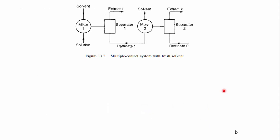A multi-contact system is required when there is a large amount of solute remaining in the raffinate or when there is unwanted carrier liquid in the extract. In this system, the solvent and solution are mixed and separated in a first stage; the raffinate is then mixed with additional solvent in a second stage to further remove solute. The solute content in the raffinate is progressively reduced across stages.